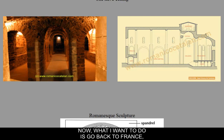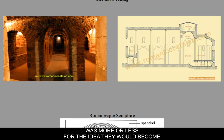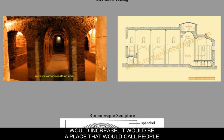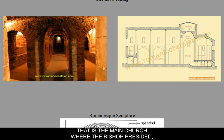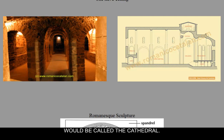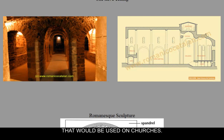Now I want to go back to France, where a lot of the churches were built. The reason why big churches and cathedrals were built was for the idea of pilgrimage — the tourist trade would increase and it would be a place that called people to worship and helped them economically. Cathedrals are actually the seat of the bishop; it comes from the term 'cathedra,' meaning the seat. Any large building that is the main church where the bishop presided would be called a cathedral. Now I want to talk about Romanesque sculpture used on churches.